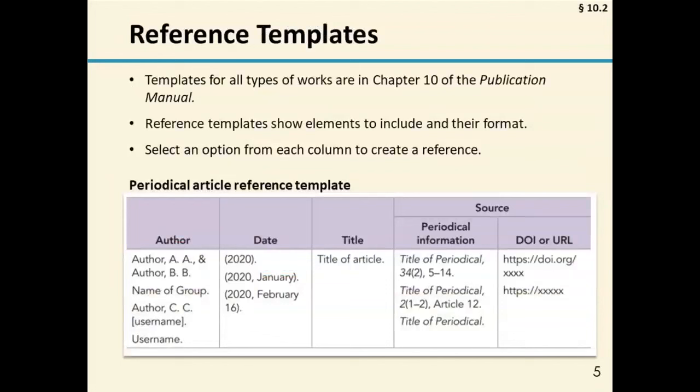You can see those elements in any of the templates available in Chapter 10 of the publication manual. The examples in that chapter are grouped by category — periodicals, books, reports, and so on — and each category begins with a template. For this example, if you're looking at a journal article with the template in front of you, you can select an option from each column to put together your reference. The template shows the possibilities for details in the reference and the formatting of those details.